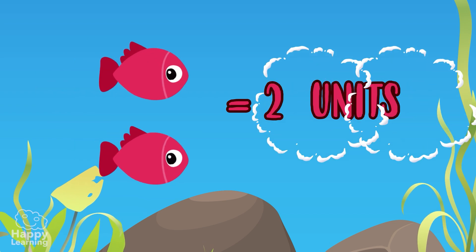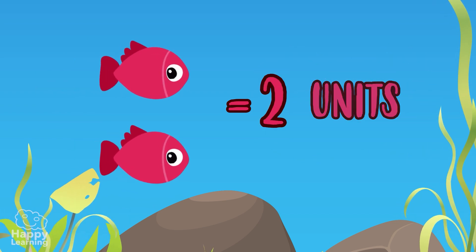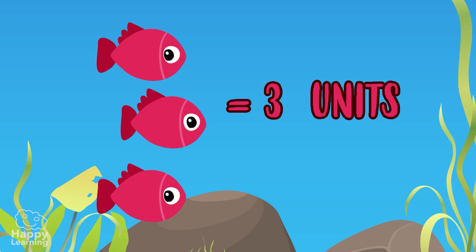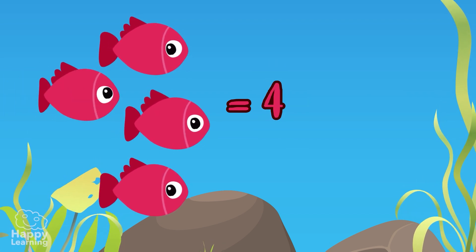So if we have two units, we represent them with the number two. Three units with the number three, and so on up until the number nine.